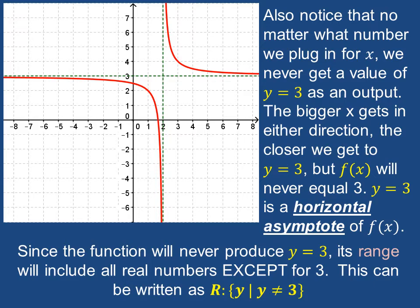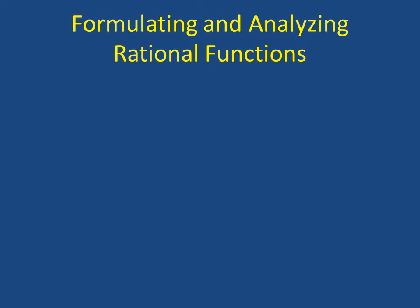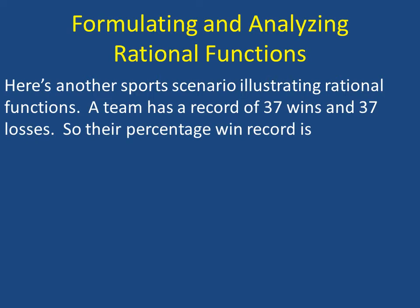So how can we formulate and analyze rational functions? Well, let's look at an example. Here's another sports scenario illustrating rational functions. A team has a record of 37 wins and 37 losses. So their percentage win record is 100% times 37 wins divided by a total of 74 games that they've played, and that gives us 50%. So the question is, how many consecutive wins do they need to get a percentage record of 60%?